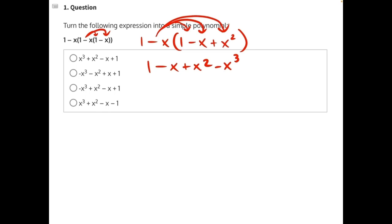There are no more like terms to combine so now we must rearrange all of our terms from descending order of powers starting with a negative x to the third because that is the highest power that we have. Negative x to the third. If we take a look at our answer choices this eliminates the first and last option.